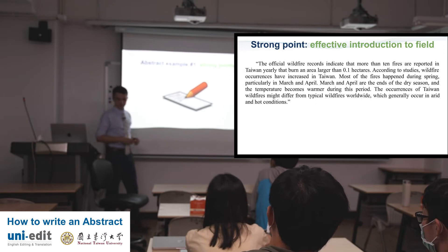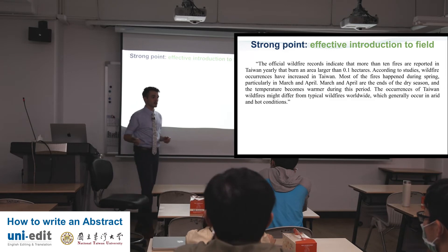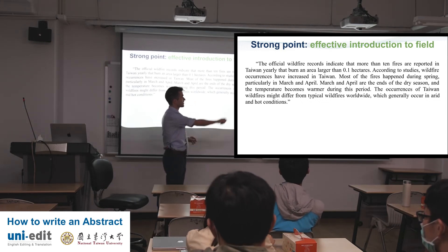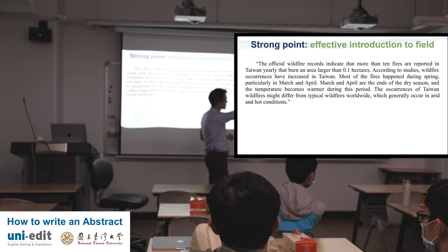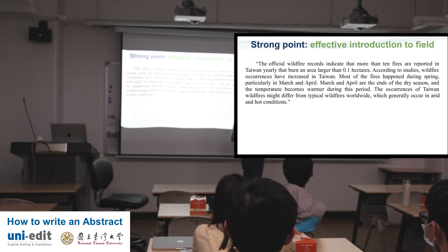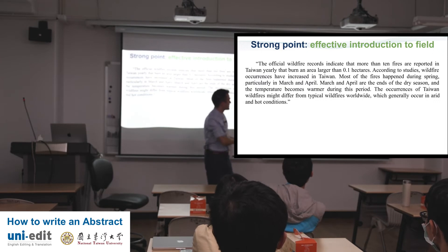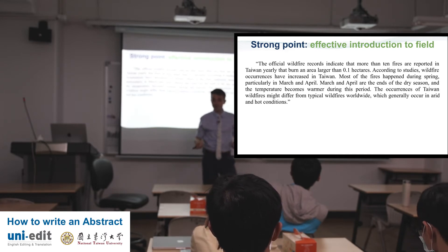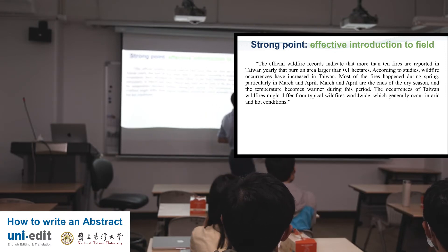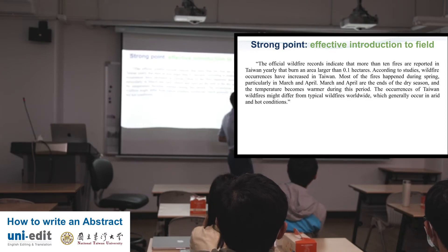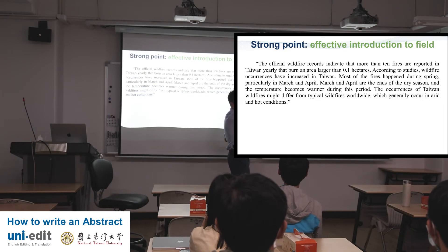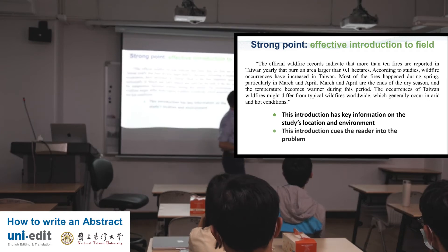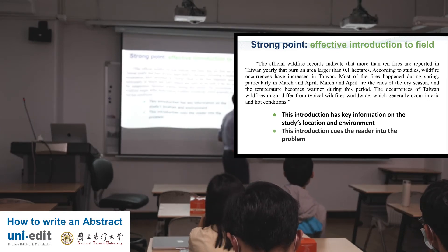Strong points — this abstract did some things well. Effective introduction to the field: the beginning was pretty clear, we established very quickly what we were talking about. Specifically, we talk about wildfire records in Taiwan that burn an area larger than 0.1 hectares. We have good study information: most fires happened in spring, in March and April. The occurrences of Taiwan's wildfires might differ from typical wildfires — there's your problem statement, 'might differ,' that's doubt. This is a pretty strong introduction with key information on location and environment.